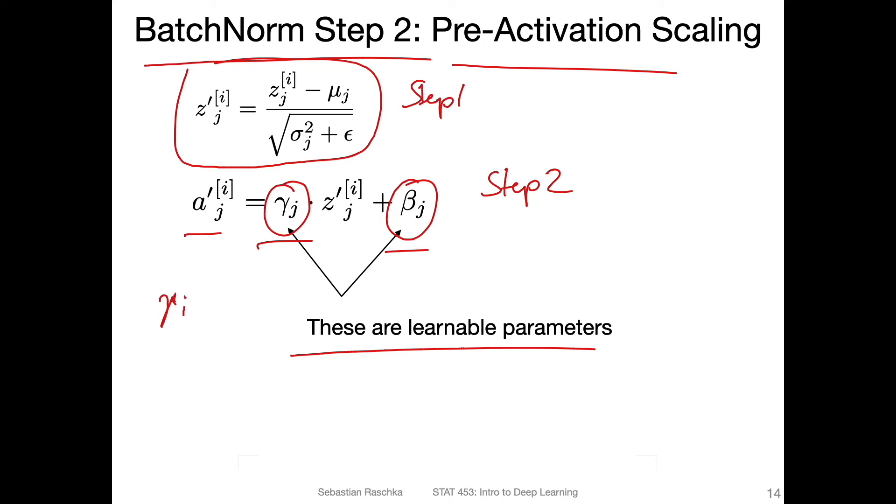So technically it can learn to undo what we just did in step one, right? It essentially can undo it. If gamma_i,j happens to be equal to this term and beta_j happens to be equal to this one, these are learnable so it may happen. So the network can actually learn to undo step one.